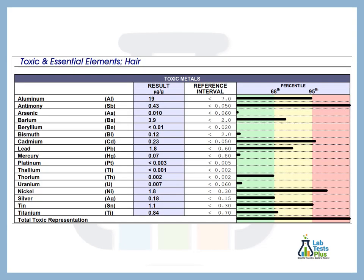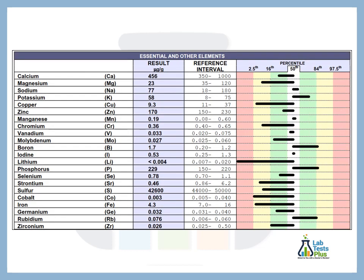Coming in a little bit closer at the toxic metal section again, we've got high antimony, high aluminum, cadmium, lead, and nickel. Nickel is often high and is sometimes a trigger for allergic reactions.